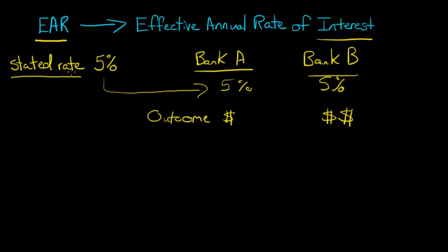Due to the effect of this effective annual rate of interest. And why we have this difference is because different banks or different accounts might have a different number of compounding periods. The number of compounding periods is what causes this difference.